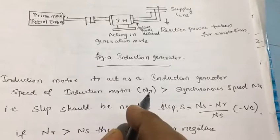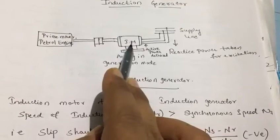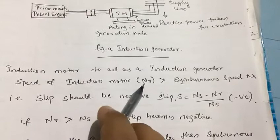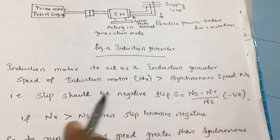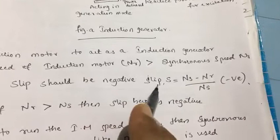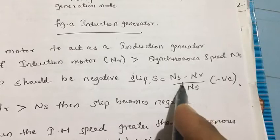But if we want the same induction motor to act as a generator, the rotor speed nr must be greater than synchronous speed ns. In that case, the slip will be negative. The slip equation is: s = (ns − nr) / ns, where ns is synchronous speed and nr is rotor speed.